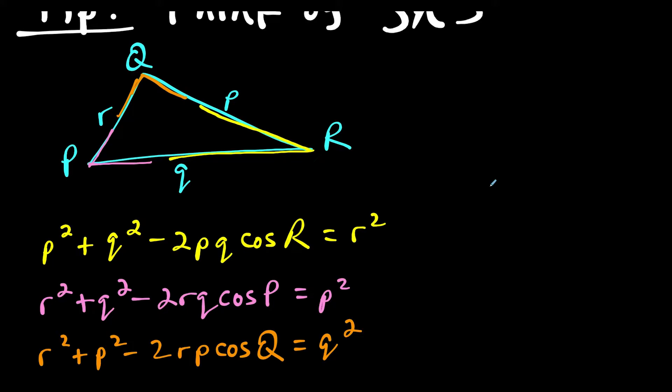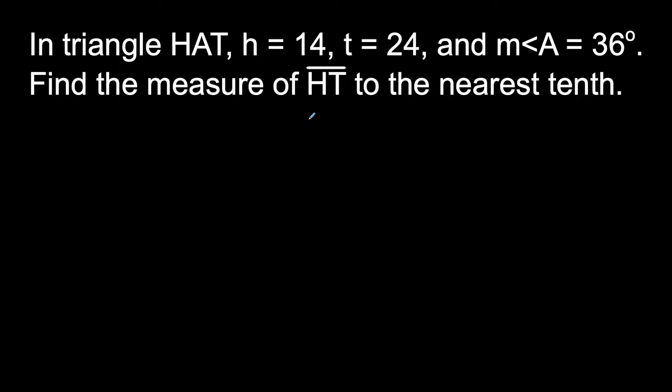So now that we've seen how to set up this formula for any triangle, let's go ahead and look at an example. For this question we have triangle HAT and we're given two sides and the angle between them. So we could just draw something out here.